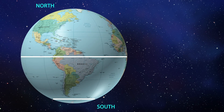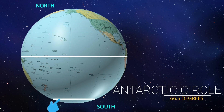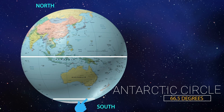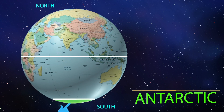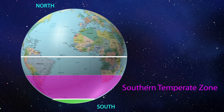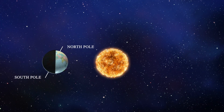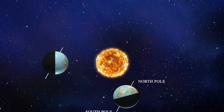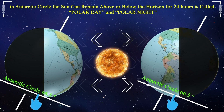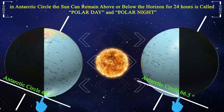The Antarctic Circle is a parallel of latitude on the earth at approximately 66.5 degrees south of the equator. The region south of this circle is known as the Antarctic, and the zone immediately to the north is called the Southern Temperate Zone. In the Antarctic Circle, the sun can remain above or below the horizon for 24 hours, called Polar Day and Polar Night.